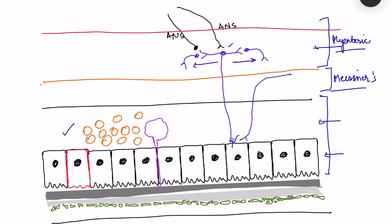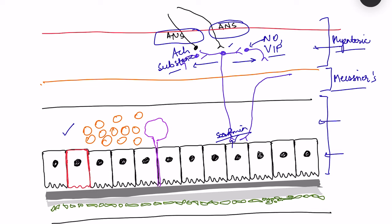When there is a stretch of the gastrointestinal tract, serotonin is released by epithelial cells, which then stimulates an afferent neuron making connections in both retrograde and anterograde directions. The retrograde neuron releases acetylcholine and substance P, responsible for contraction of the muscular layer, while the anterograde neuron releases nitric oxide and VIP (vasoactive intestinal polypeptide), responsible for relaxation of muscles ahead of the bolus causing the stretch.